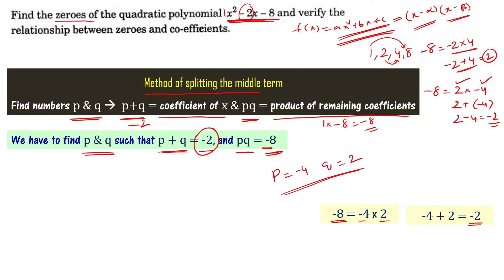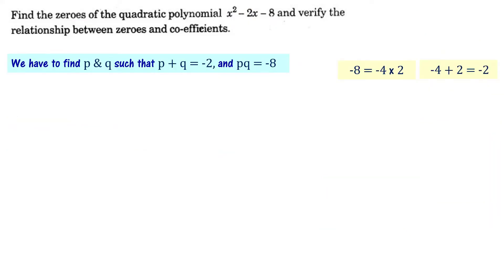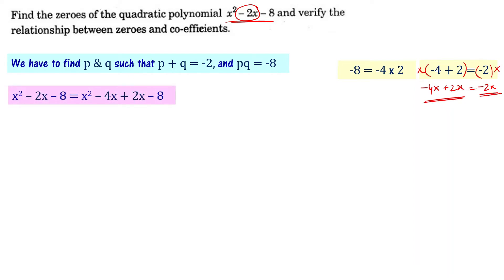Once we have these numbers identified, we split the middle term. Multiplying both sides, minus 4x plus 2x equals minus 2x, which matches the middle term. So instead of minus 2x, I split it into two terms: minus 4x and 2x.